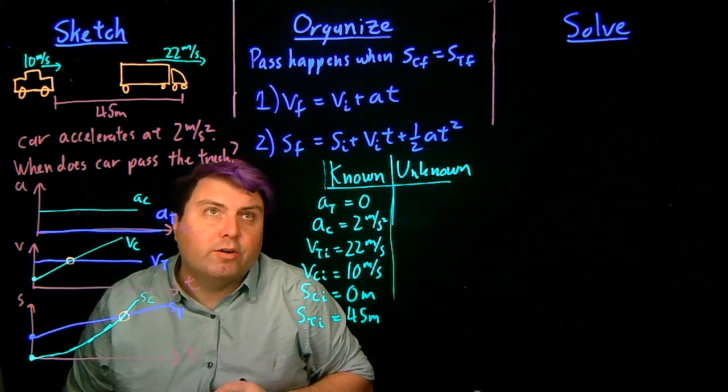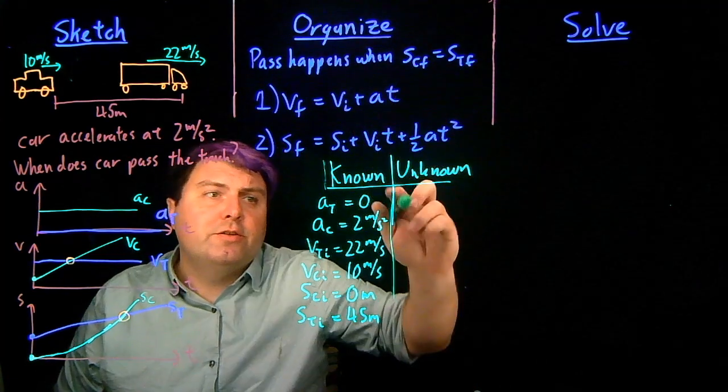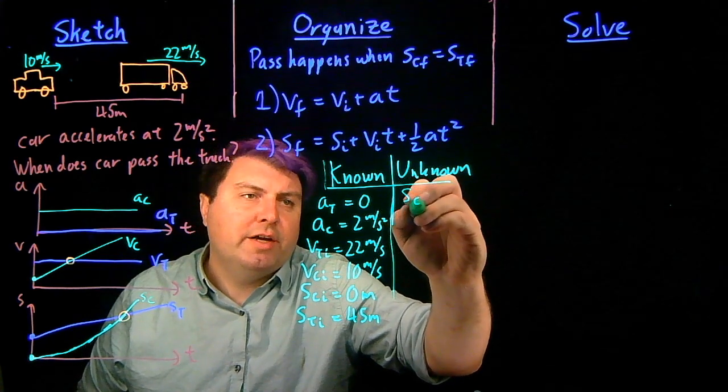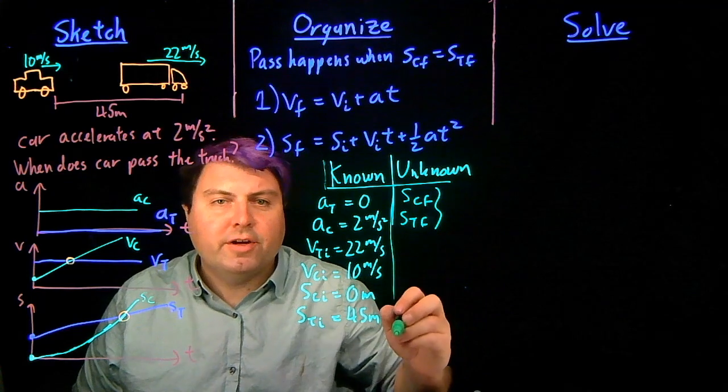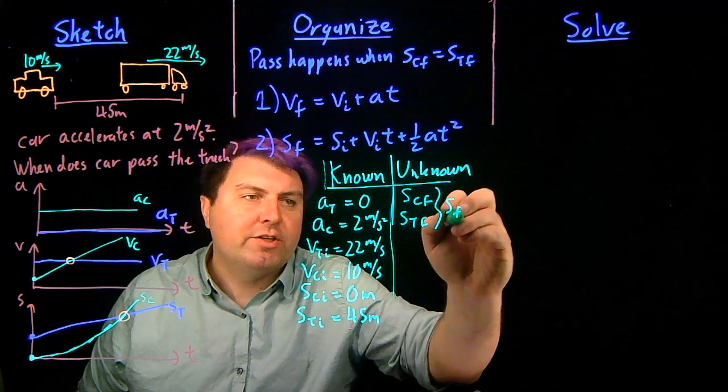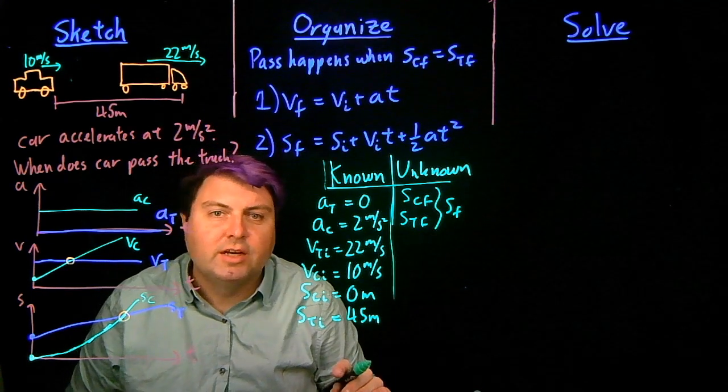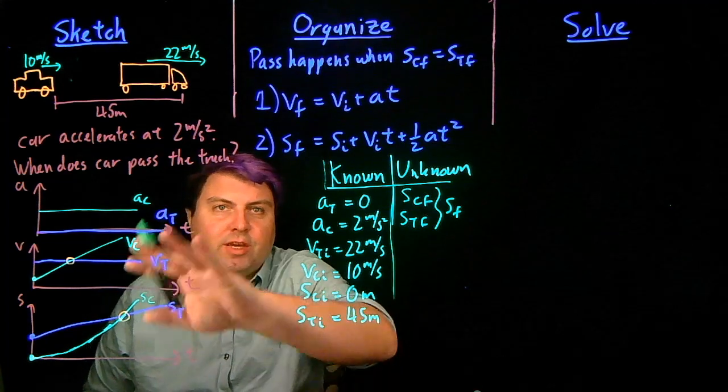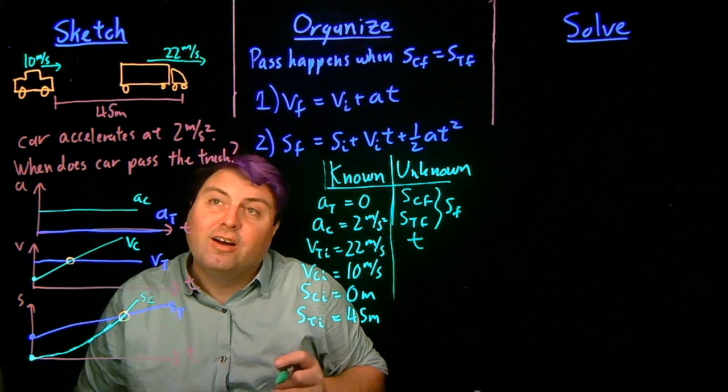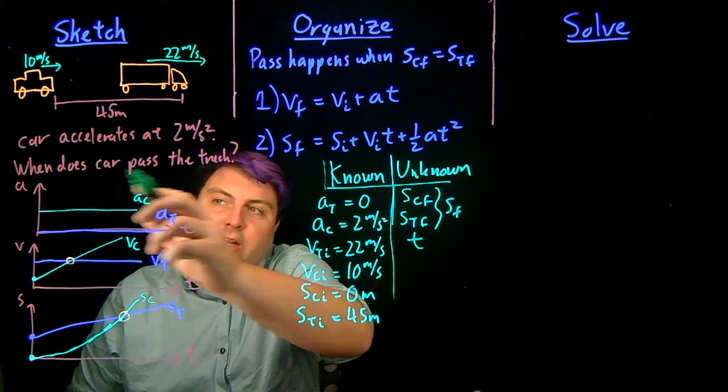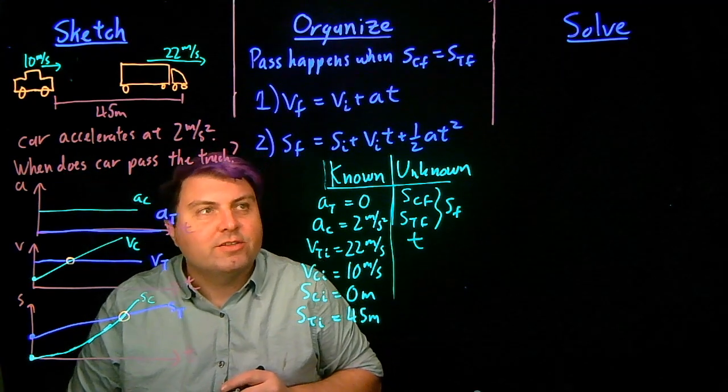Well what don't we know? We don't know the two final positions. We don't know SCF and we don't know STF. But we know they're going to have to be equal, so we can kind of eventually put them as some sort of SF. We haven't written time anywhere. And if we don't have time written as a known, we want to write it as an unknown. Also, they're asking for the when, so that is the time that we are trying to solve.